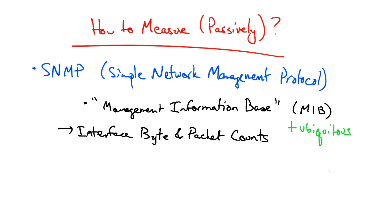The advantage of SNMP is that it's fairly ubiquitous. It's supported on essentially all networking equipment, and there are many products for polling and analyzing SNMP data. On the other hand, it's fairly coarse, and you cannot express complex queries on the data.